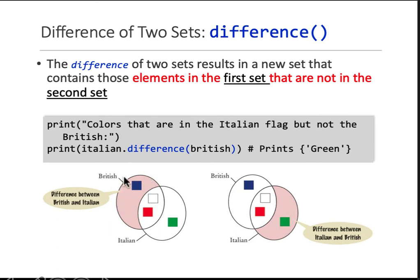And similarly, for if you do British minus Italian, it will give you only blue. Or sorry, British dot difference Italian will give you this.